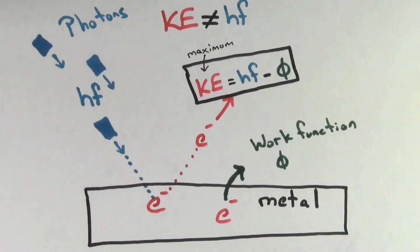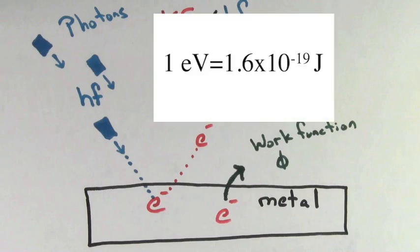In other words, if you give the kinetic energy of an electron in joules, you've got to express hf in joules and phi, the work function, in joules. If you do use joules, the numbers are going to be very, very small. So another unit that people find more convenient to use in this case are electron volts. Don't forget that one electron volt equals 1.6 times 10 to the negative 19th joules.